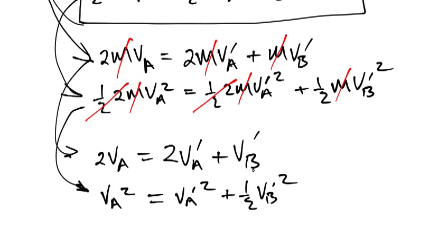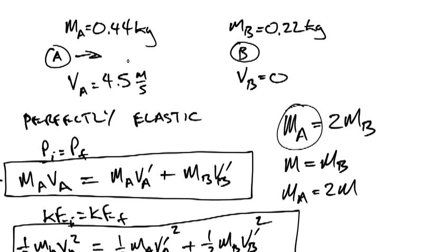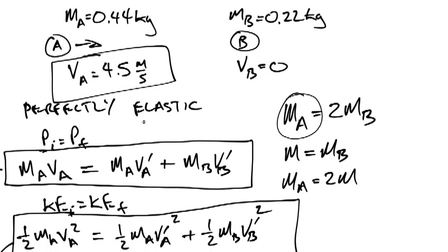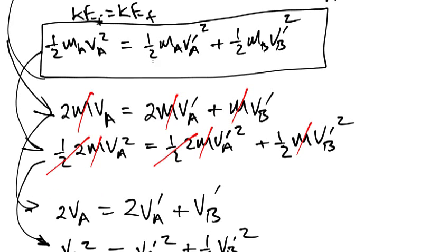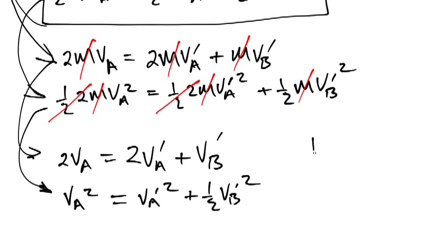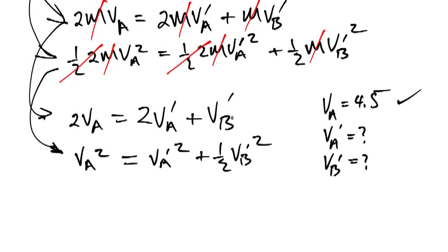Those are the two equations. In terms of what we know and don't know: VA is known — it's 4.5 meters per second. The unknowns are VA prime and VB prime. So we have two equations and two unknowns.